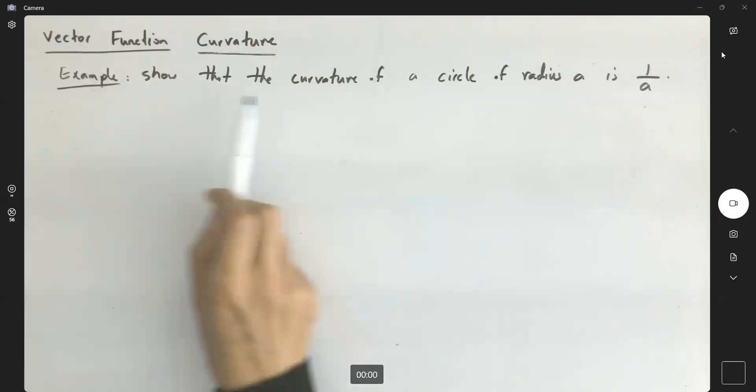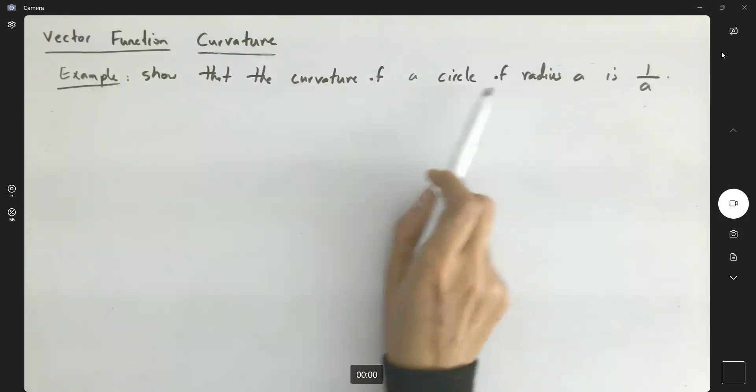This example says, show that the curvature of a circle of radius A is 1 over A.